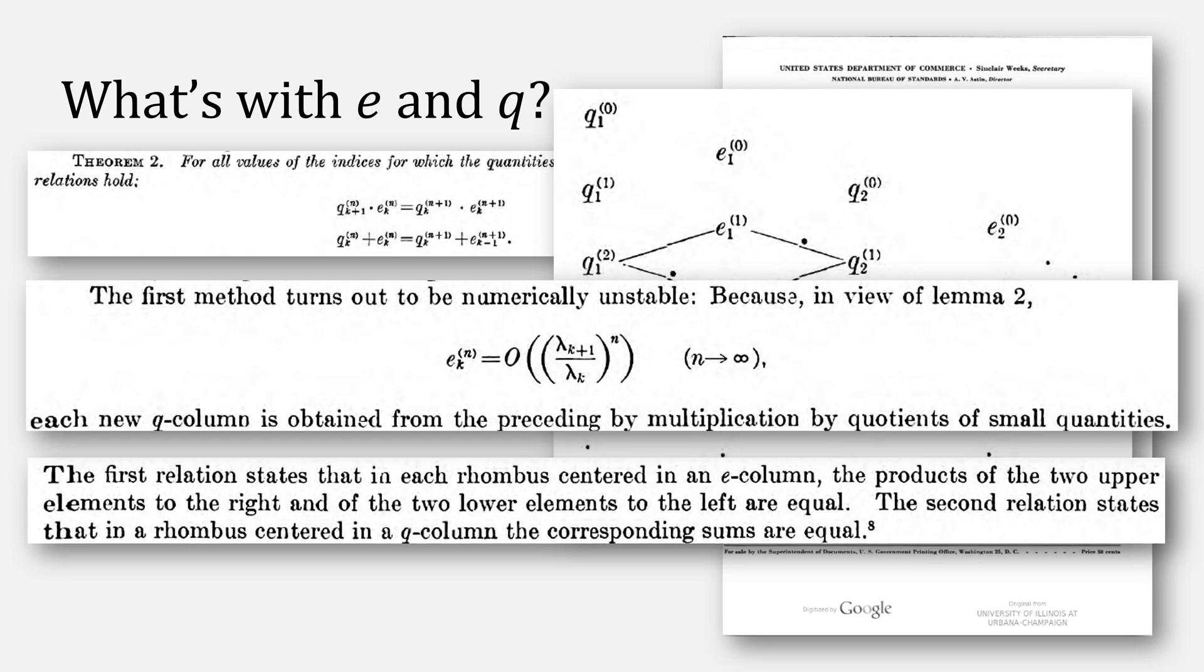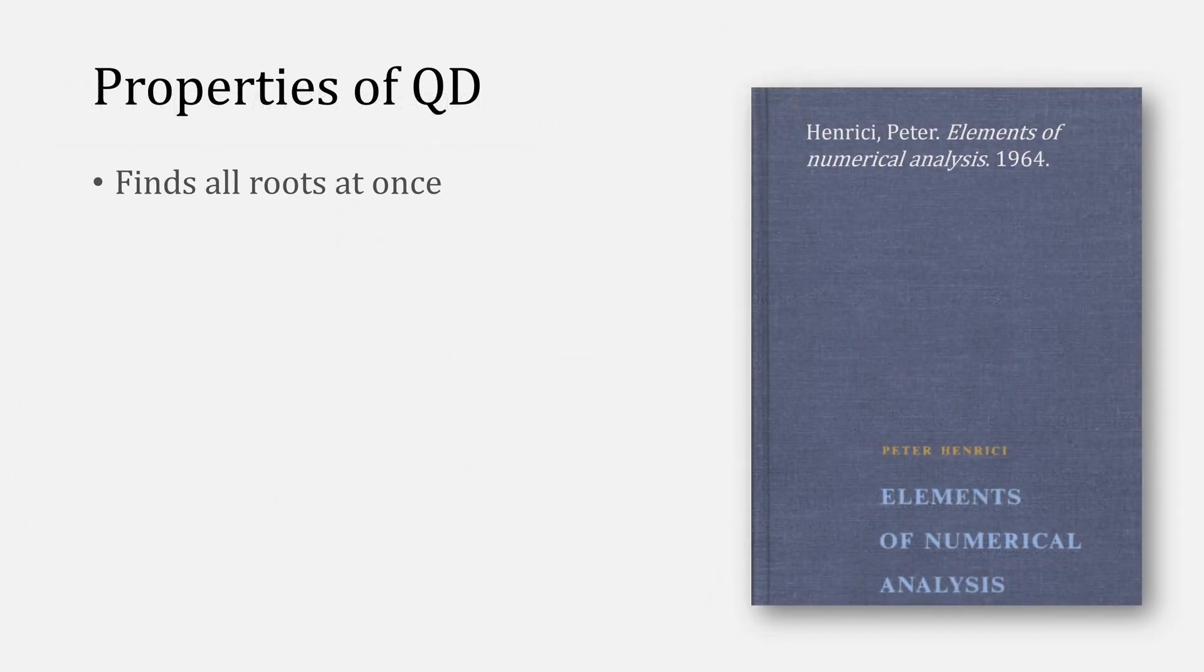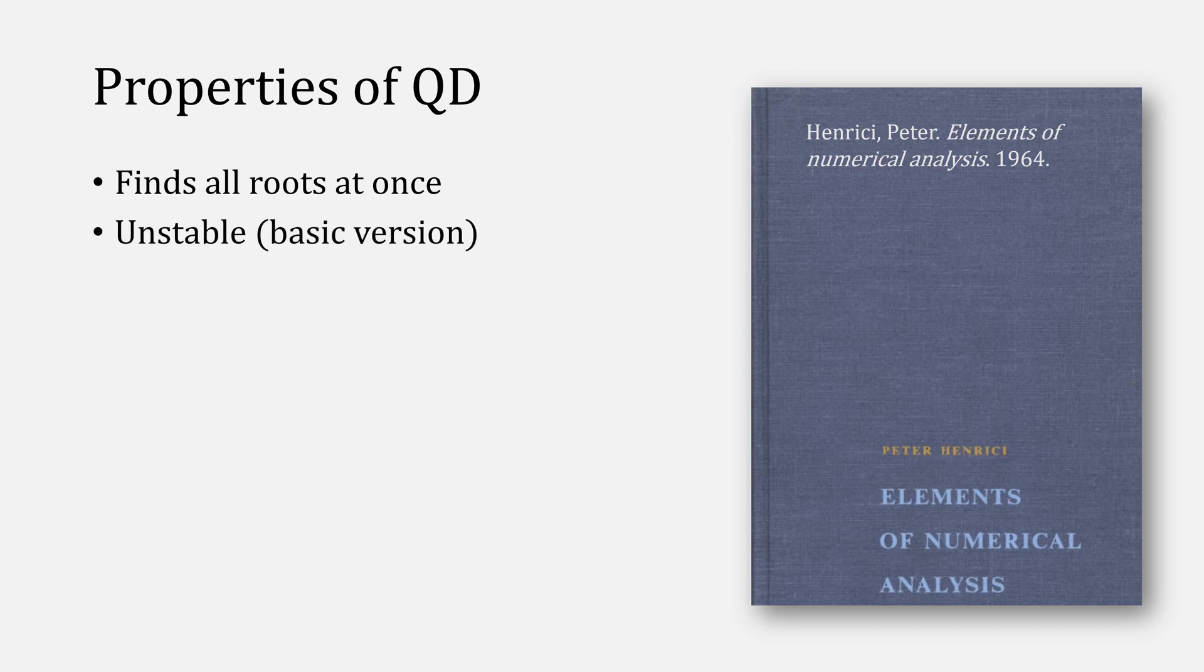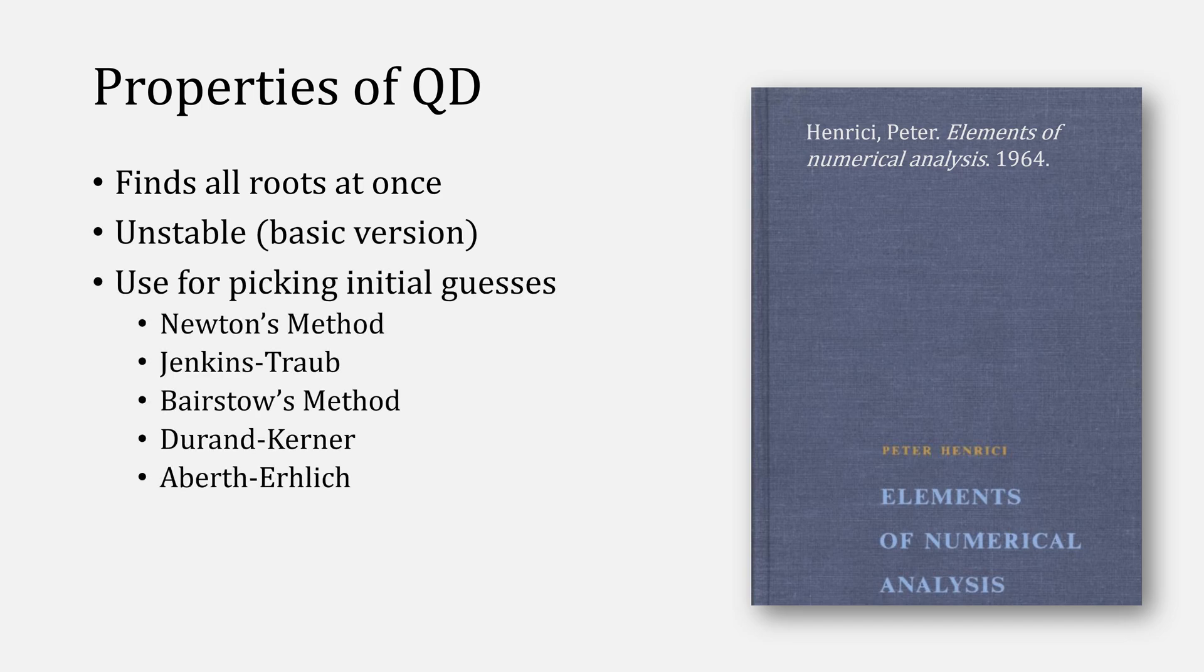The quotient difference algorithm does find all of your roots at once, although it is unstable in the most basic version. Usually, it's used instead for picking initial starting values for Newton's method, Jenkins-Traub, Bairstow's method, Durand-Kerner, and Aberth-Ehrlich.